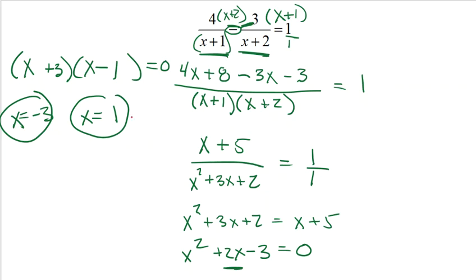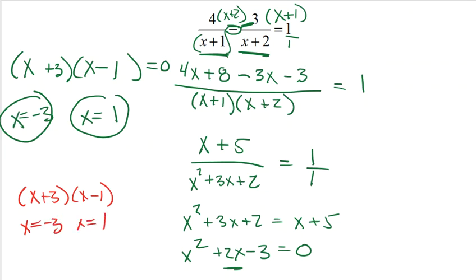One quick comment: when you factor and use the zero product property, always write the equals 0. A lot of students write x plus 3 times x minus 1 and then just state the answers, but we're solving an equation. You need that zero there for the zero product property to technically work, so don't forget it.